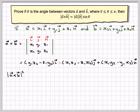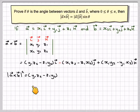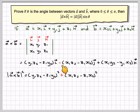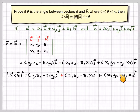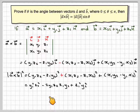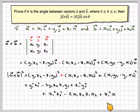Now I want to find the magnitude squared of this. So it's going to be the first component squared plus the second component squared plus the third component squared. The minus sign, when you square it, will just become positive. Expanding each of these using (a minus b) all squared, you get y1²z2² minus 2·y1·z2·z1·y2 plus z1²y2², and similarly for the other terms.